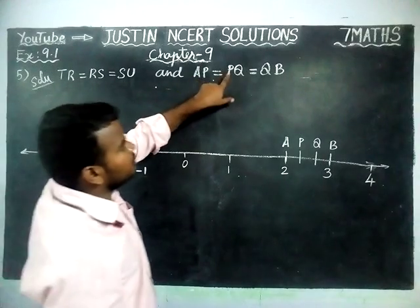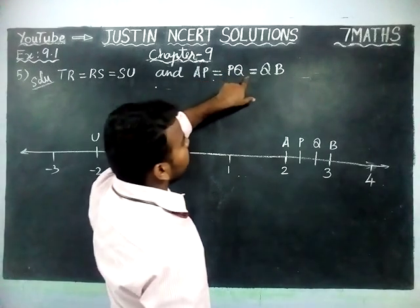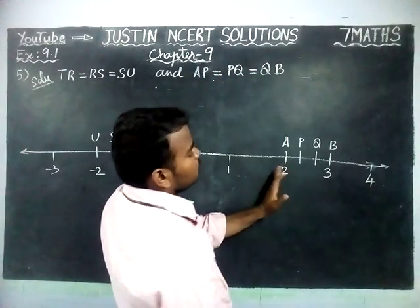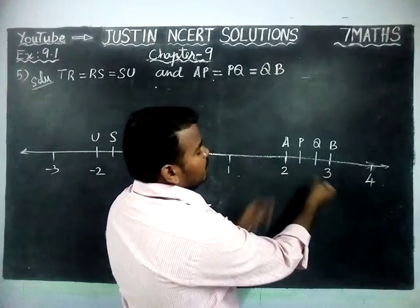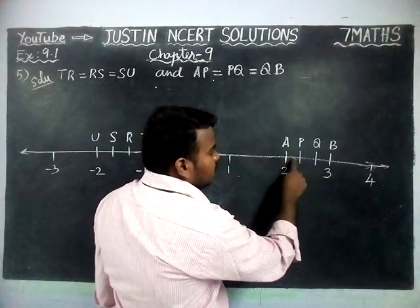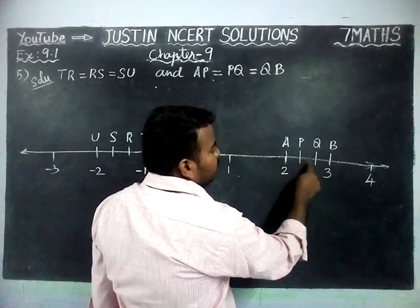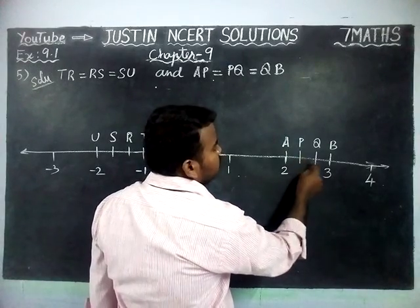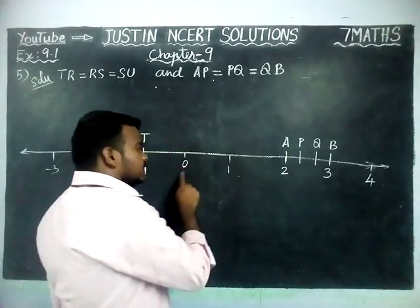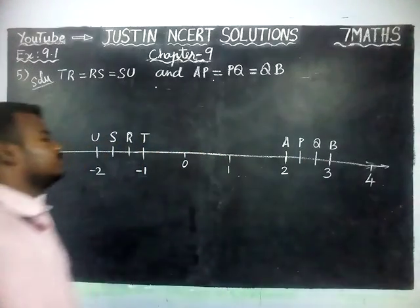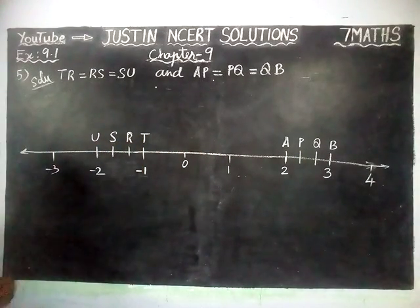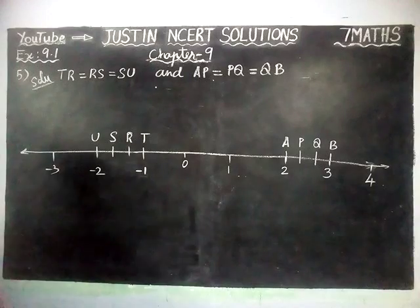Next, AP is equal to PQ is equal to QB. Here, between 2 and 3, this gap is also separated into three equal parts.